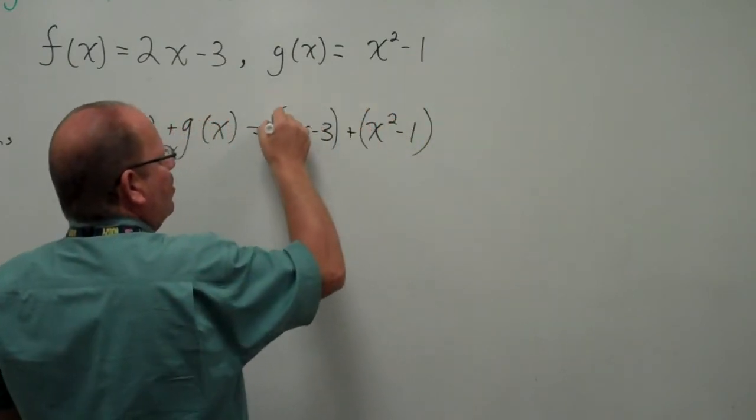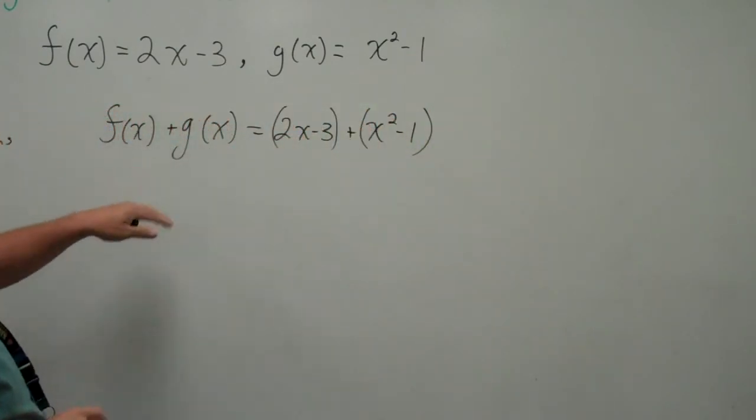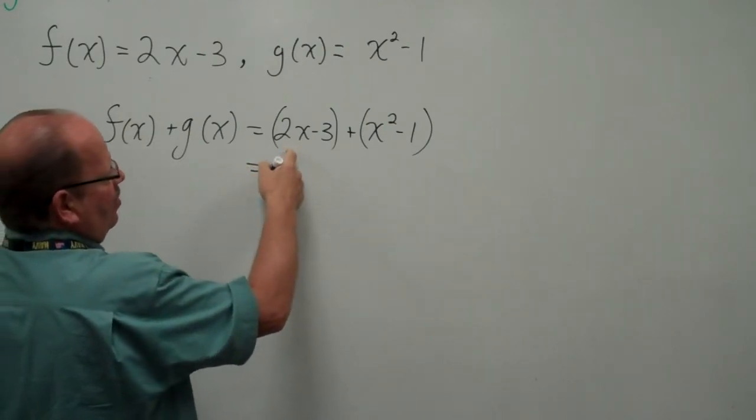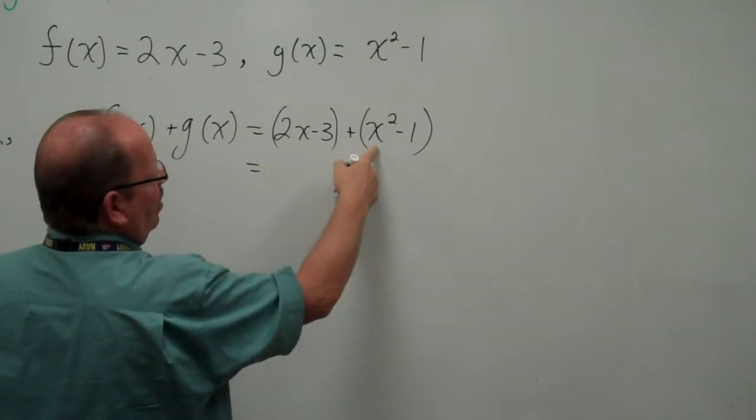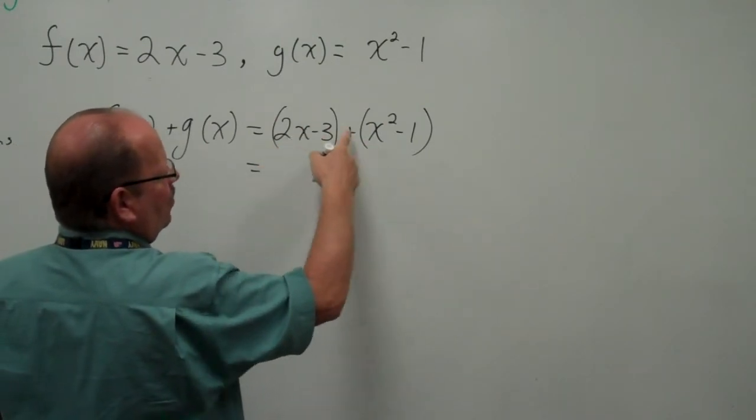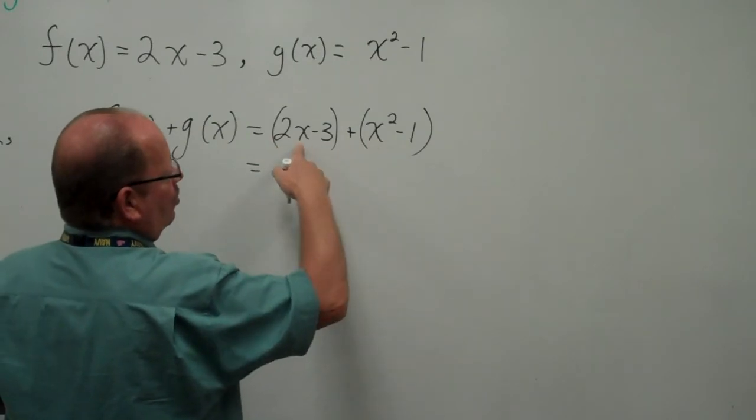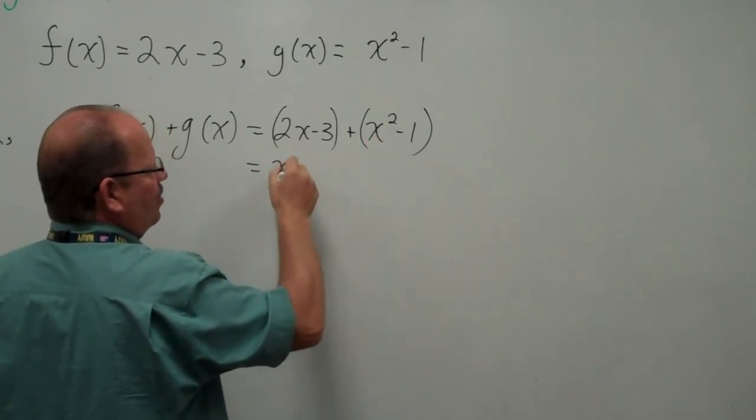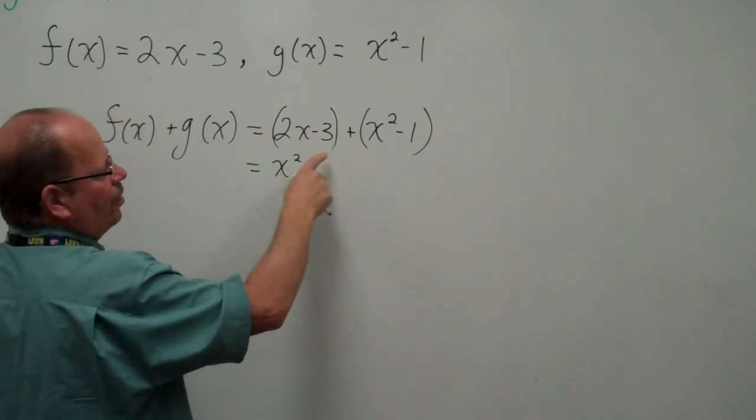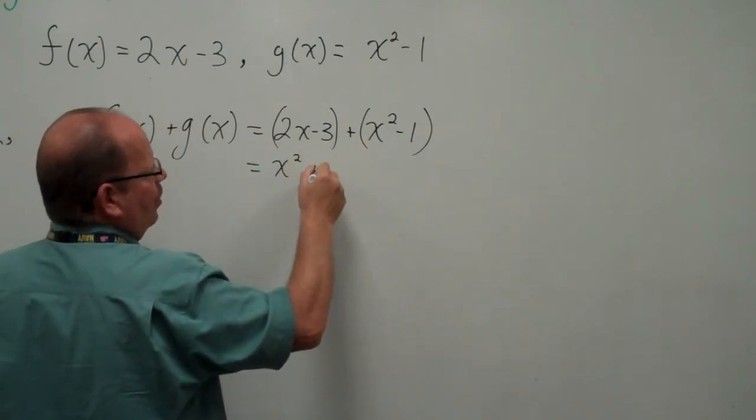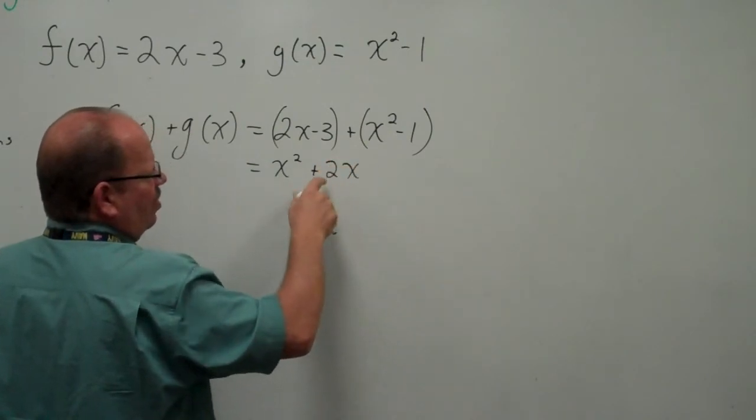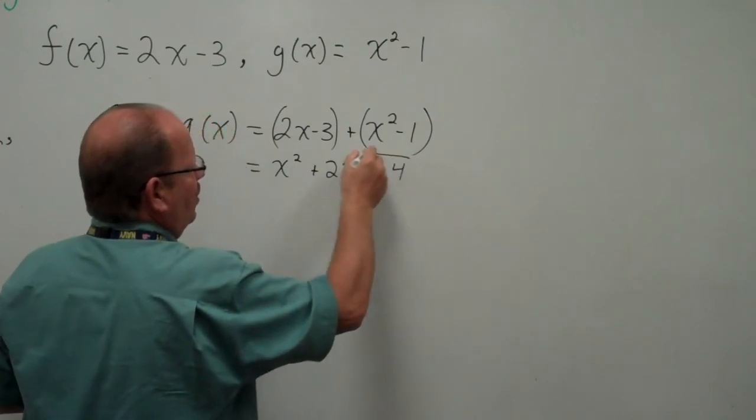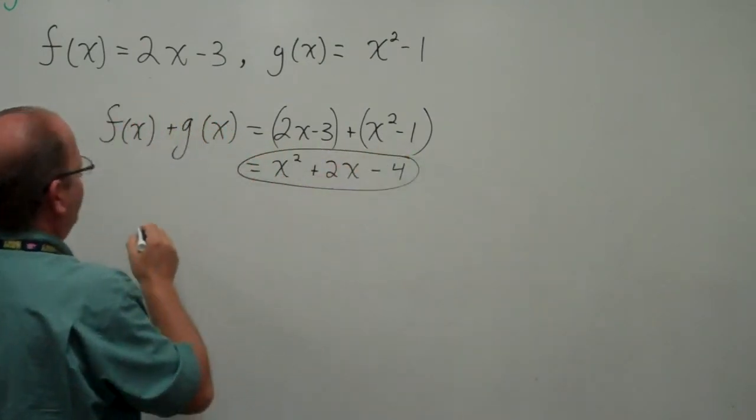I'm going to put these in parentheses. They're not needed on the addition, but you'll see they are needed on the subtraction. So now we just add these. 2x, it's the only x to the first, so it's going to stay alone. x², it's the only x to the second, so it's going to stay alone. Just writing them in descending order, I'm going to have x² + 2x, and I have a -3 and a -1, that becomes -4. And that problem is finished.